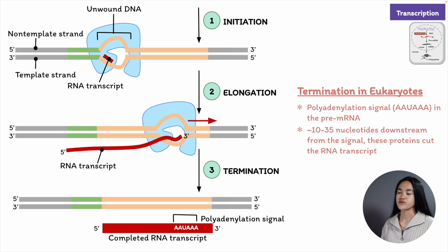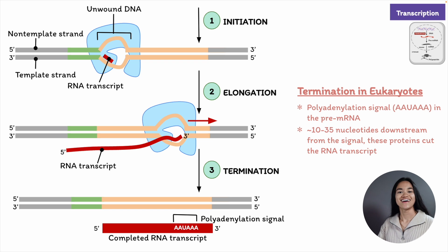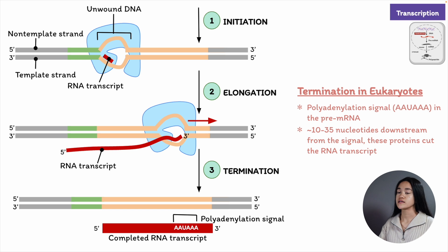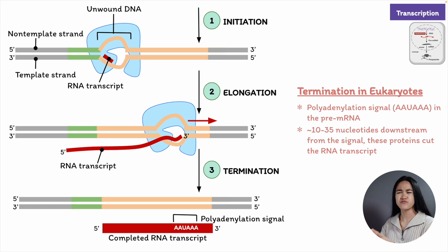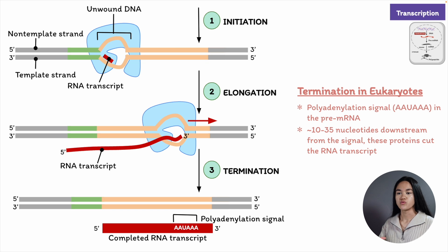The pre-mRNA will then undergo processing before it can be transported to the cytosol. In eukaryotes, DNA is enclosed within the nucleus where transcription takes place, but translation occurs on ribosomes located in the cytosol. So before mRNA can be translated into protein, it must be transported out of the nucleus. Before it can be exported to the cytosol, it must go through several RNA processing steps, which include capping, splicing, and polyadenylation. Before these steps are completed, the RNA transcript is known as pre-mRNA or precursor mRNA.